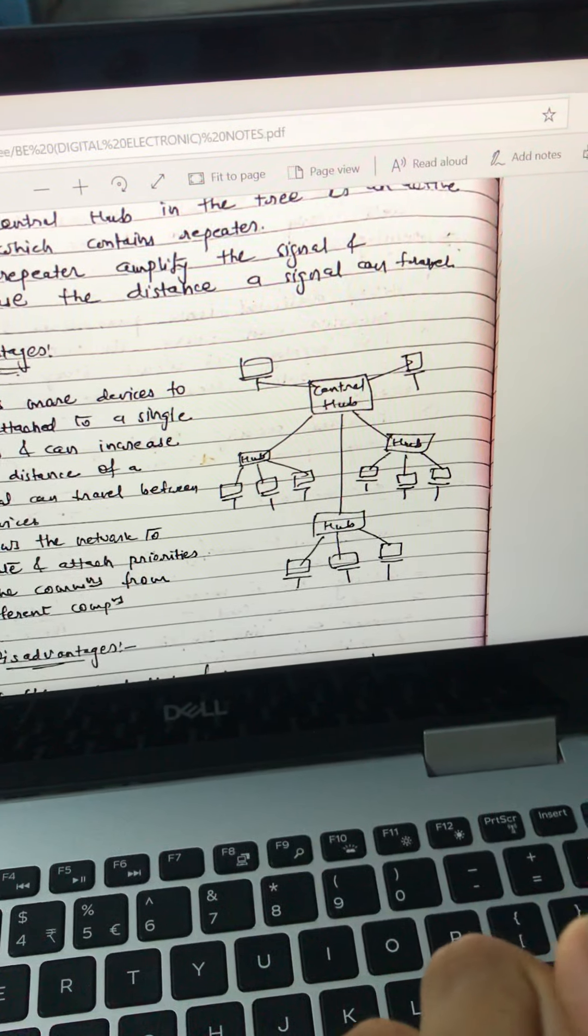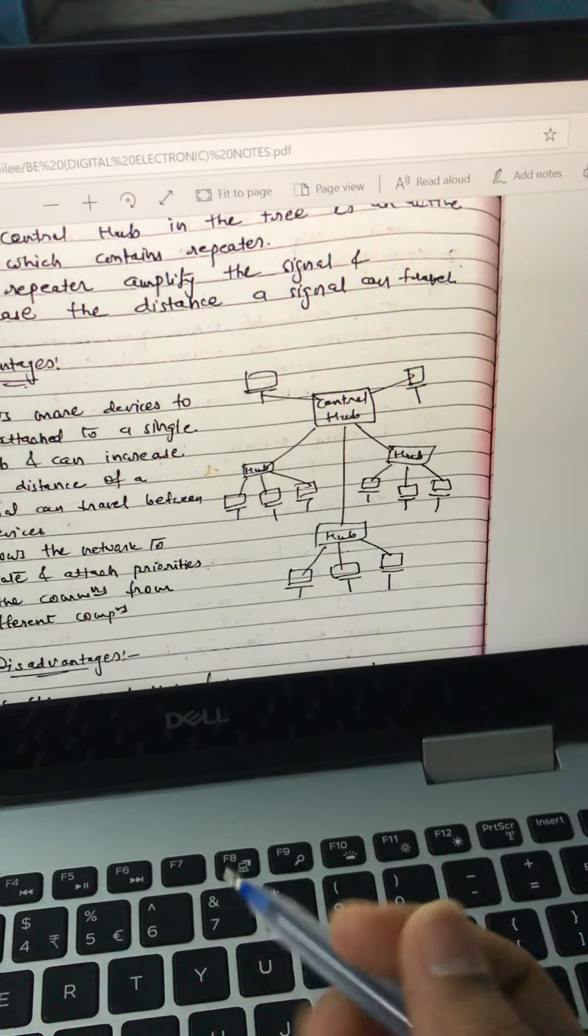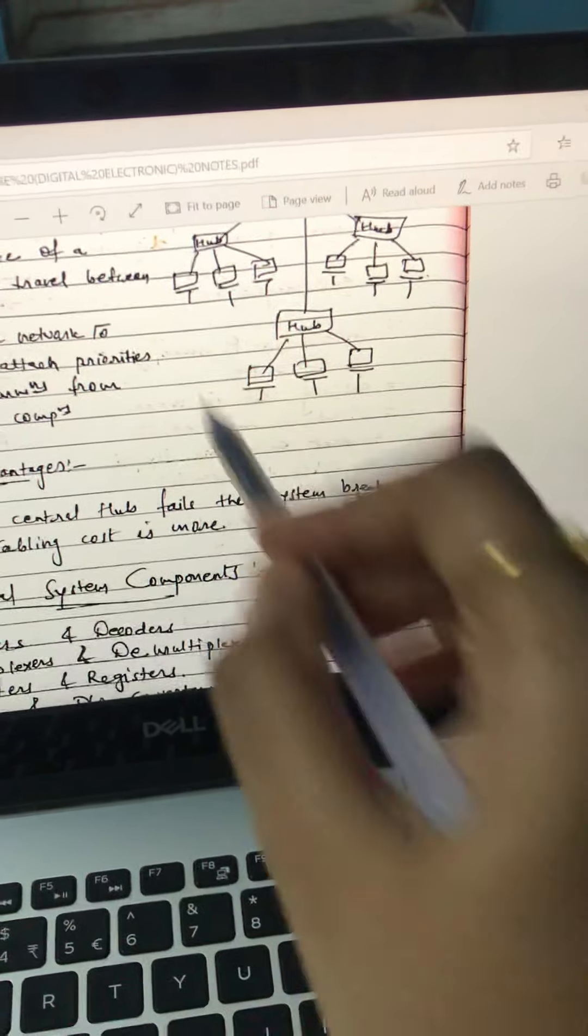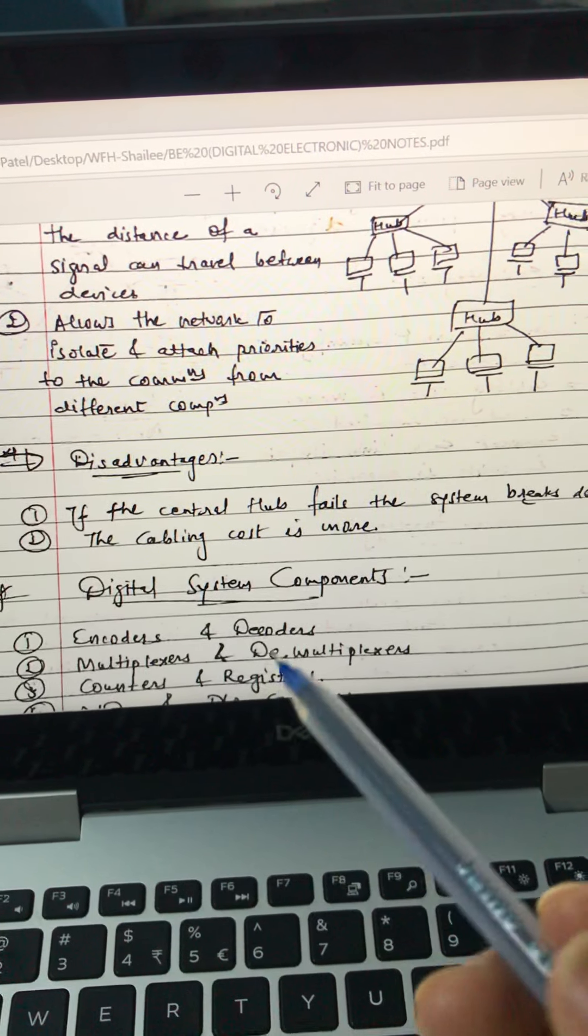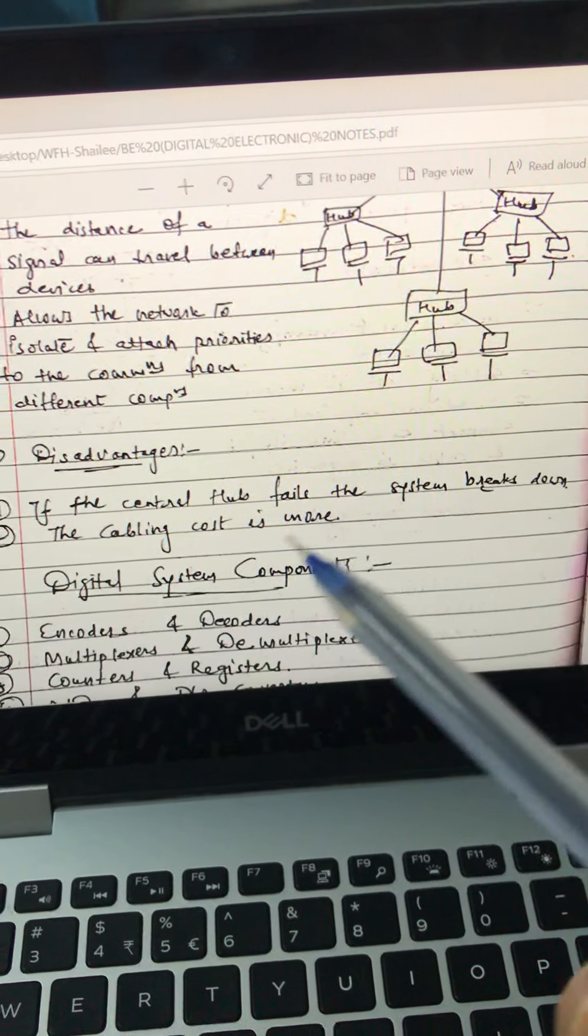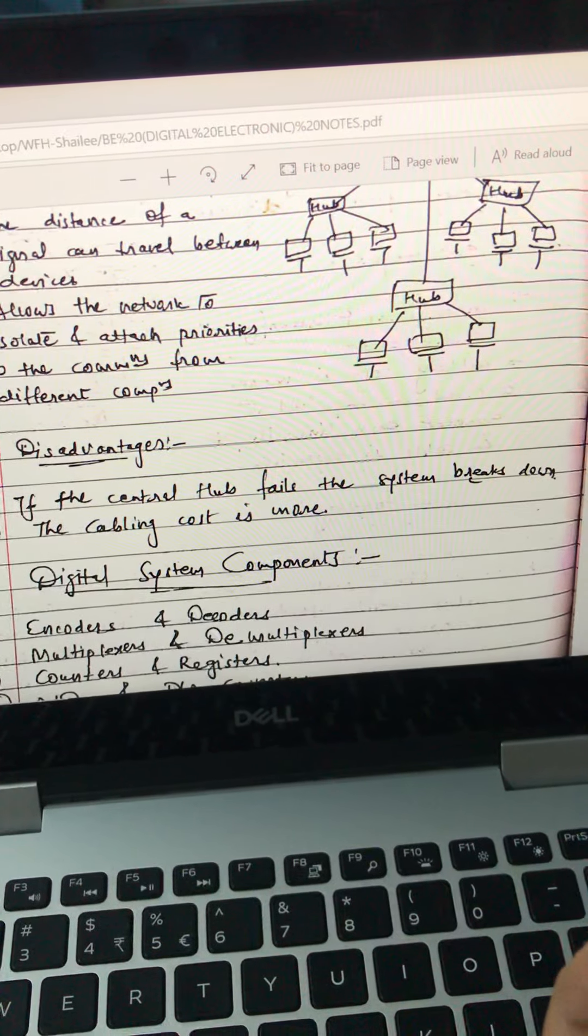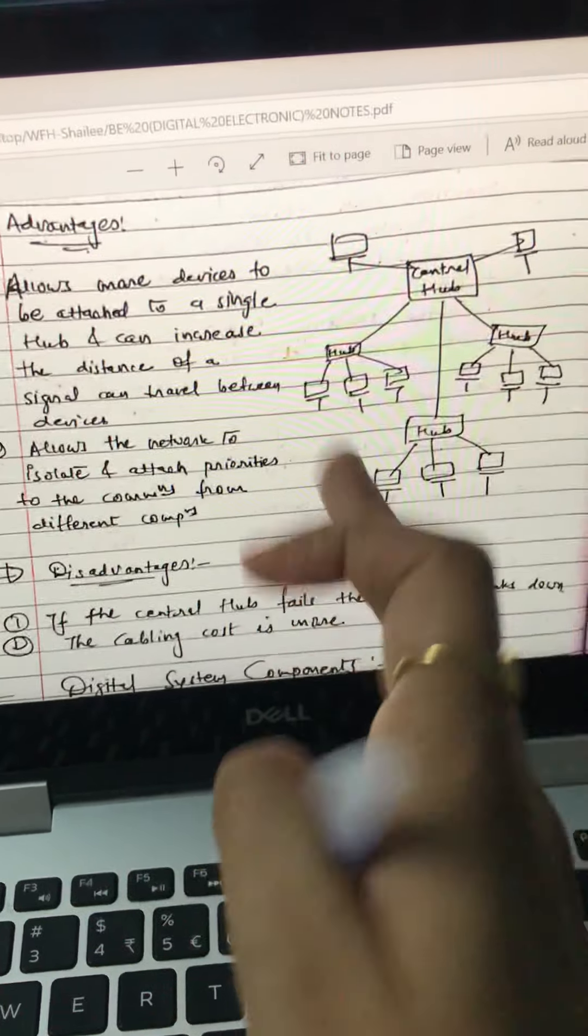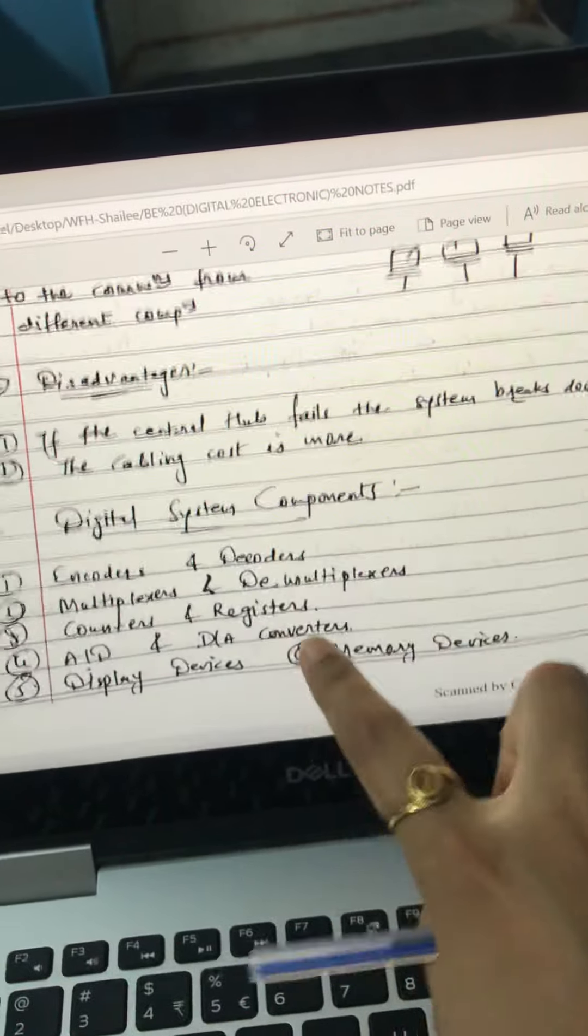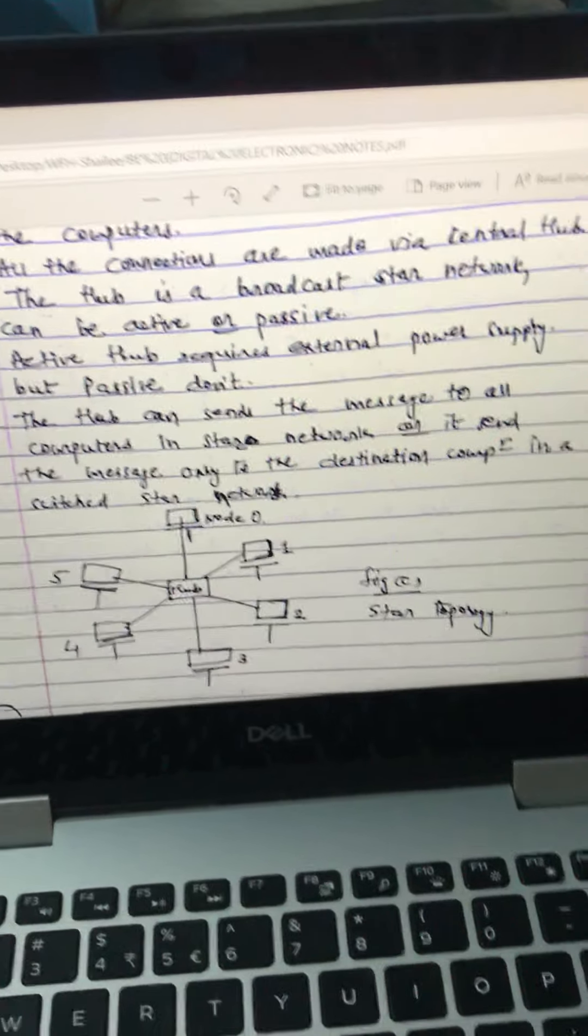Some advantages of it: it allows more devices to connect in a single cable and it is used for long distance communication. We can easily isolate a part if you want to isolate this you can. Disadvantages are if the central hub fails, the system will be totally breakdown. The cabling cost is very much. See, there are how many cables we are using. So obviously the cabling cost is very high. Many digital systems are basically done with this. So thank you.